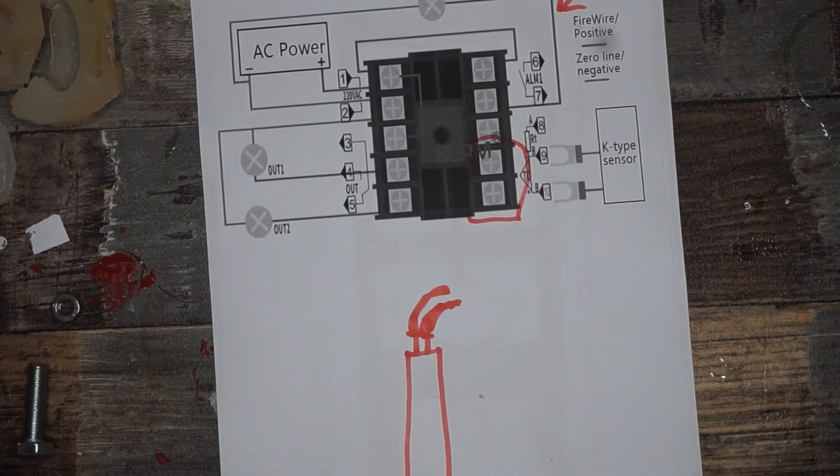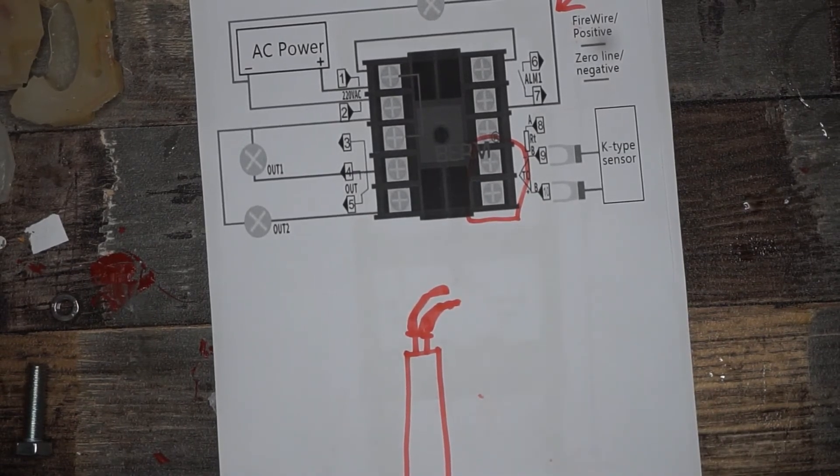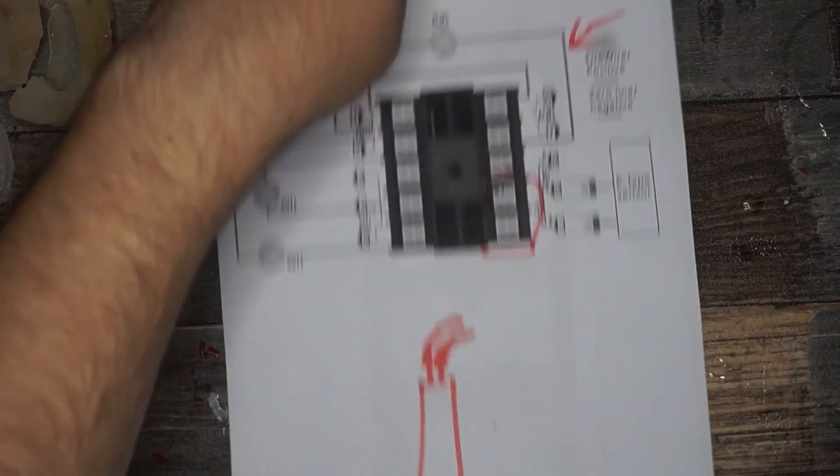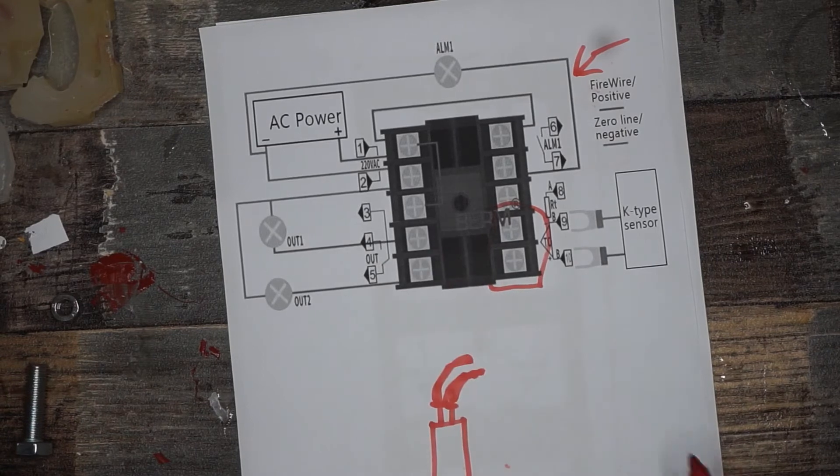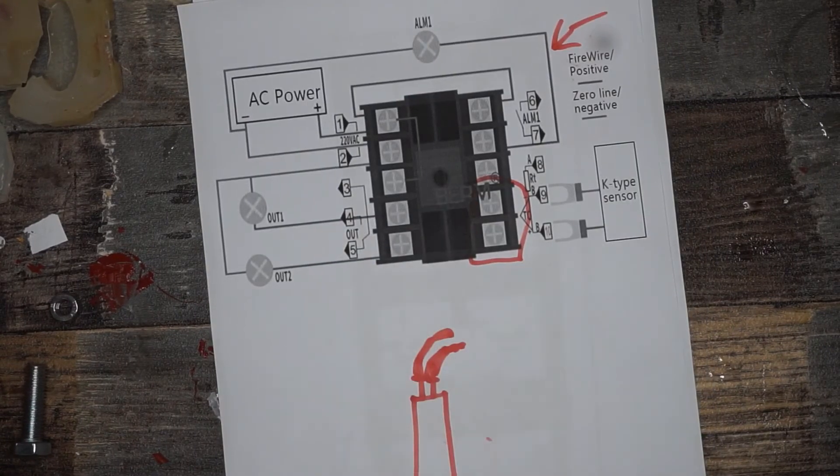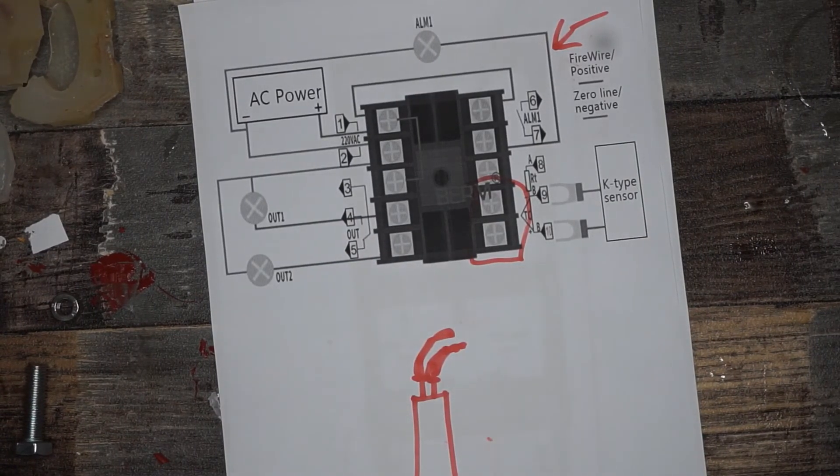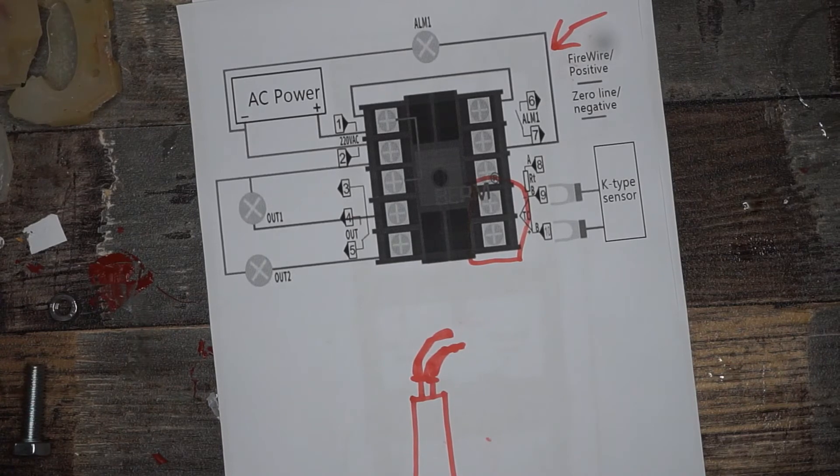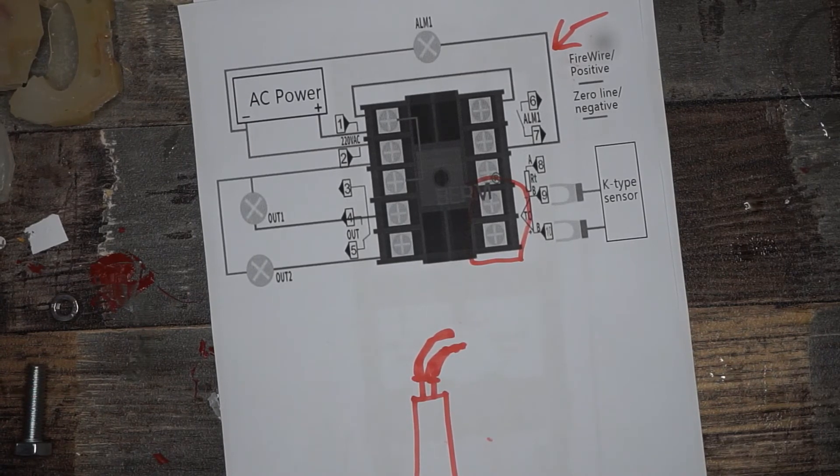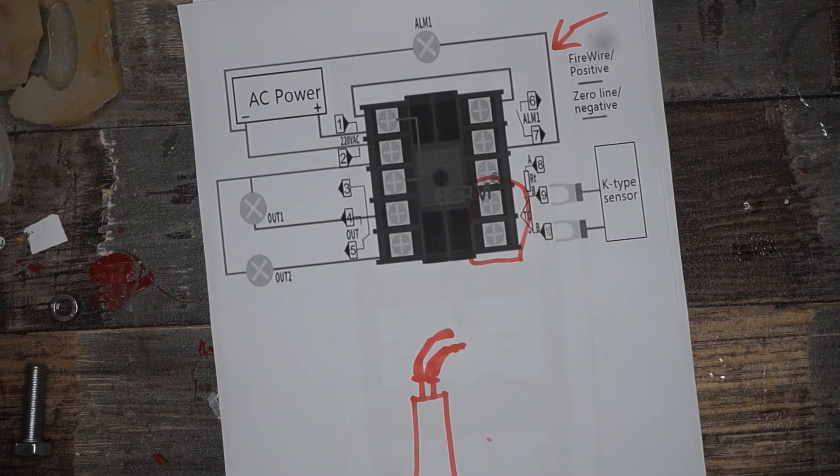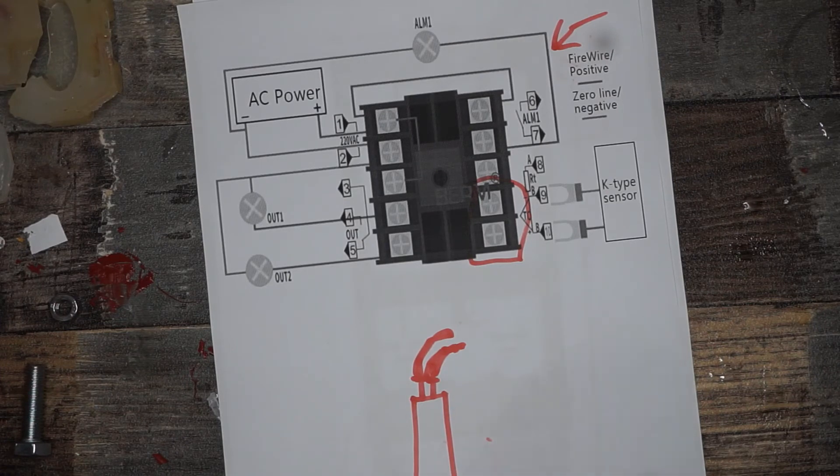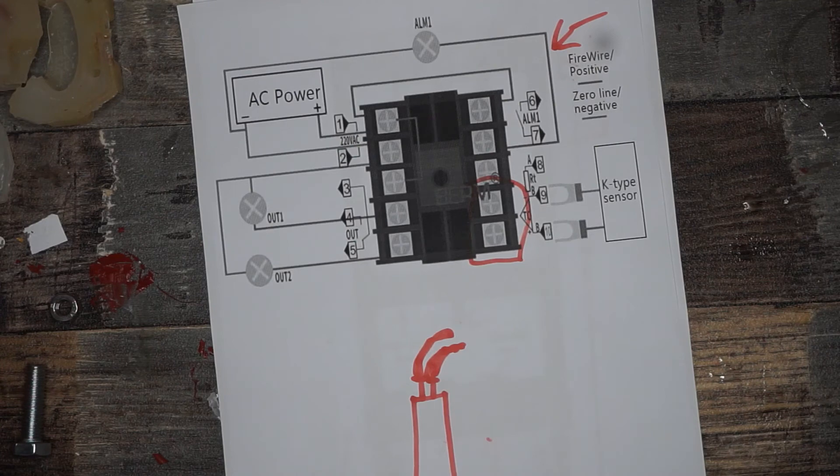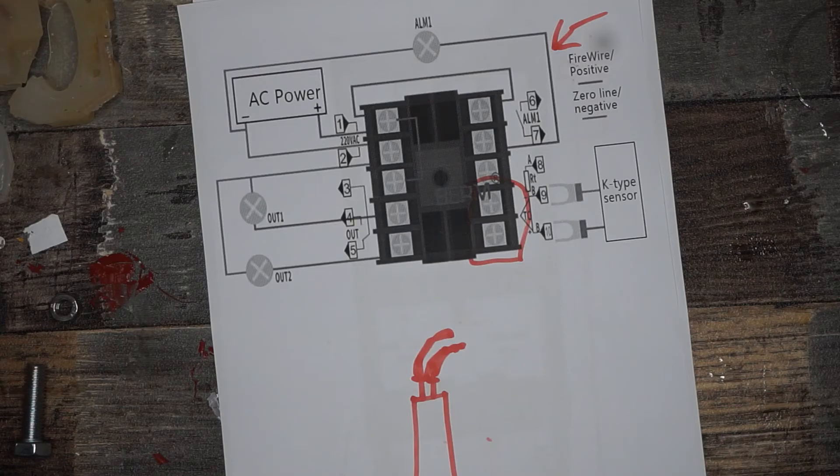That's basically it. If you don't use the same PID controller as I did you may need to wire something else. But if you use this one you can just use this diagram right here. It's very straightforward and I think you won't have a big problem doing that. But still be careful. AC power isn't a joke. Especially if you're doing this in Europe where AC power is double the voltage than it is in America for example.